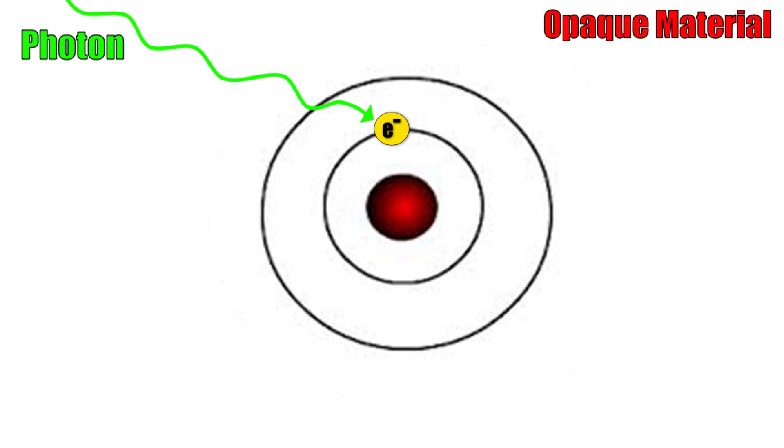In an atom of a normally opaque material, this photon's energy is enough to boost an electron to a higher energy level. In this process, all the photon's energy is absorbed and the light doesn't pass through the material.